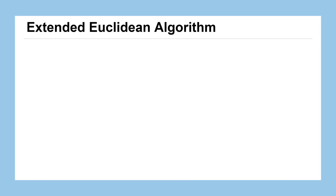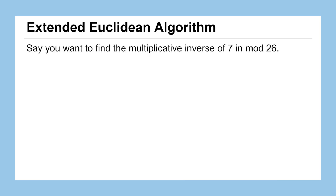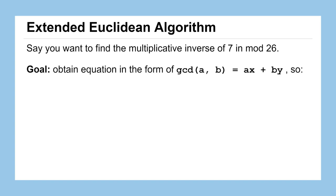Say we want to find the multiplicative inverse of 7 in mod 26. Our goal is to obtain an equation in the form GCD(a, b) = ax + by. For these specific numbers, the GCD of 7 and 26 is 1, so we're looking for 1 = 7x + 26y. Here a = 7 is our key and 26 is our modulus, the size of our alphabet.